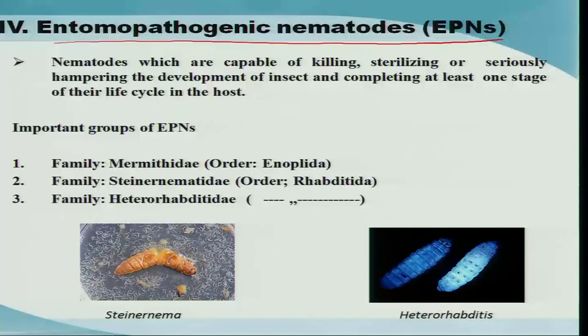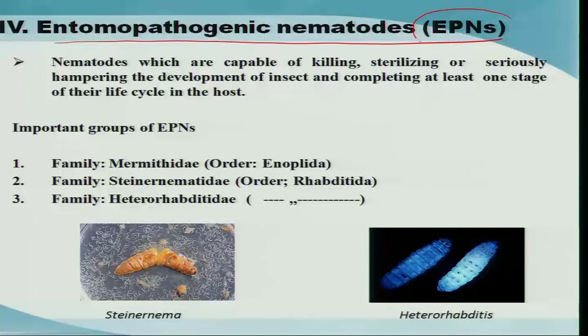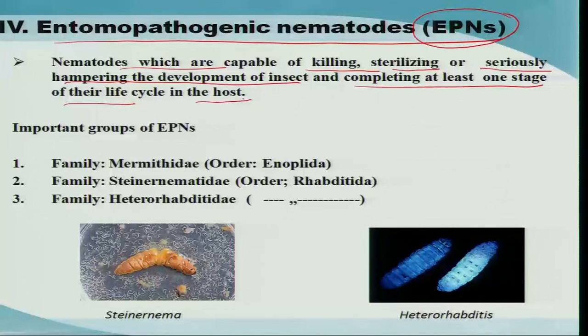Entomopathogenic nematodes, or EPNs, also come under this group of causing diseases in insects. There are many groups of nematodes considered as plant parasitic, causing diseases in plants. Similarly, certain groups of nematodes cause diseases in insects, and taking some of those groups, there has been a lot of commercial exploitation in managing various insect pests. EPNs are defined as those nematodes capable of killing, sterilizing, or seriously hampering the development of insects and completing at least one stage of their life cycle in the host.